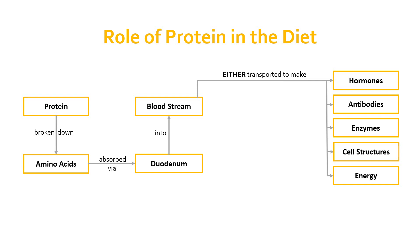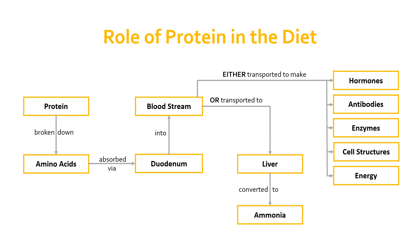If we over-consume protein and have excess amino acids in the bloodstream, those amino acids are transported to the liver, where the liver converts those excess amino acids into ammonia. Ammonia in large quantities can be very damaging to our body, so we need to get rid of it. That ammonia is then converted into urea, which goes into our urine and is excreted. We have no way of storing excess amino acids — the body doesn't have a storage for amino acids. Anything that's not used on a daily basis is transported to the liver, converted to ammonia, then into urea, and excreted.